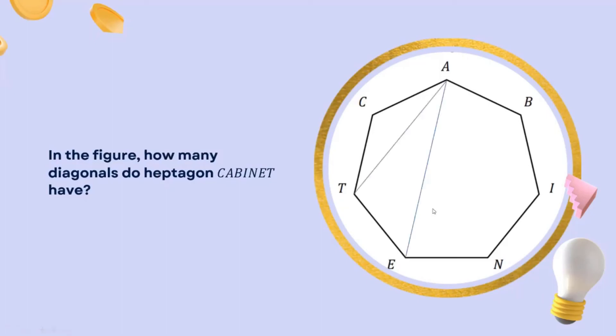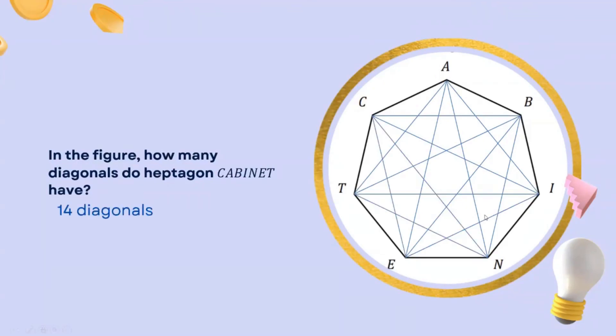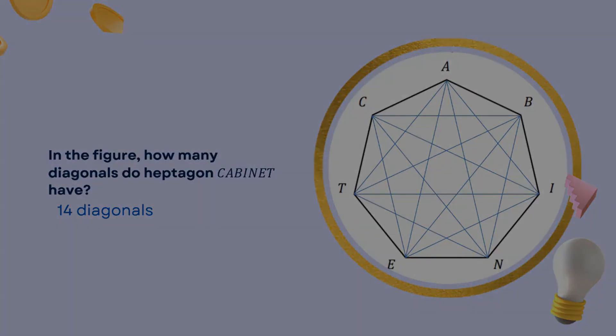1, 2, 3, 4, 5, 6, 7, 8, 9, 10, 11, 12, 13, and 14. So, the number of diagonals that the heptagon have is 14 diagonals.